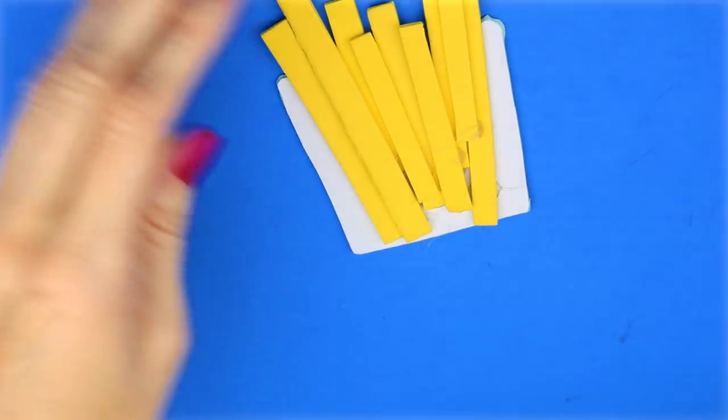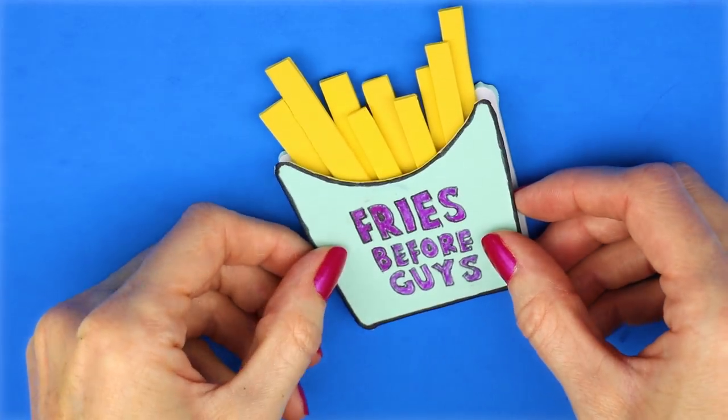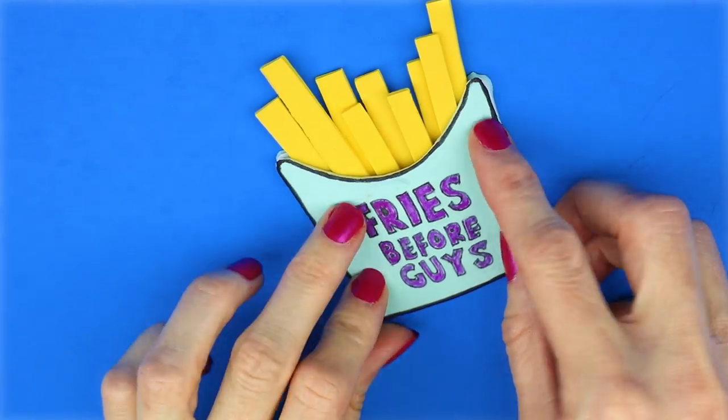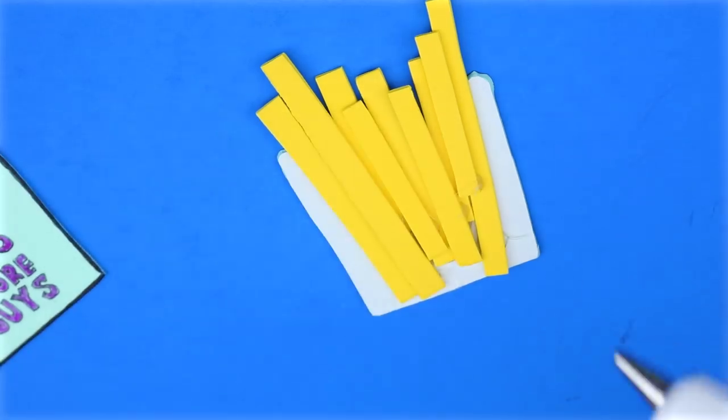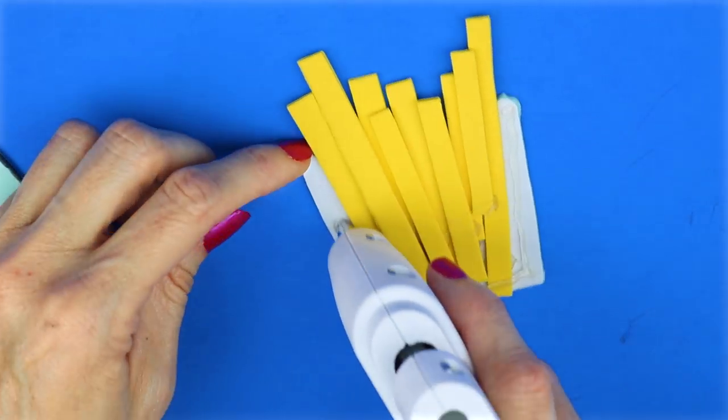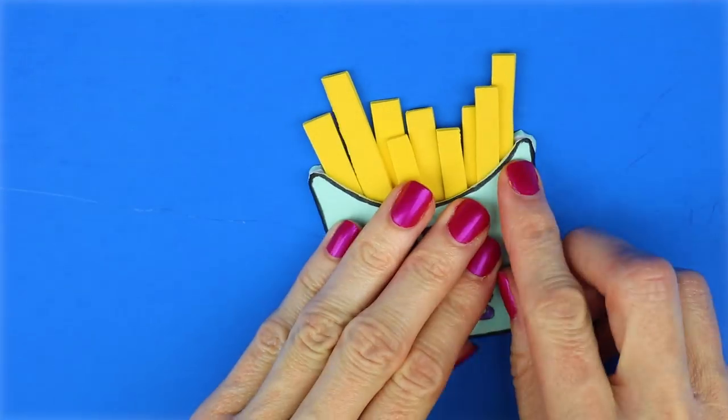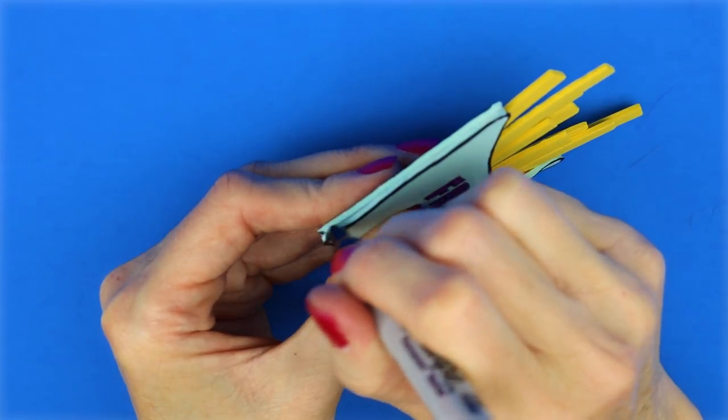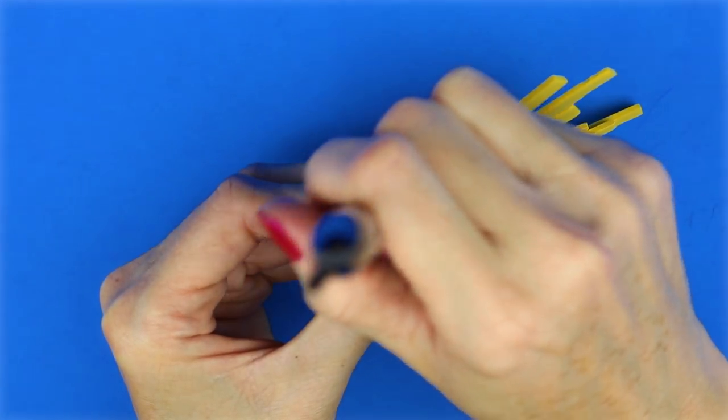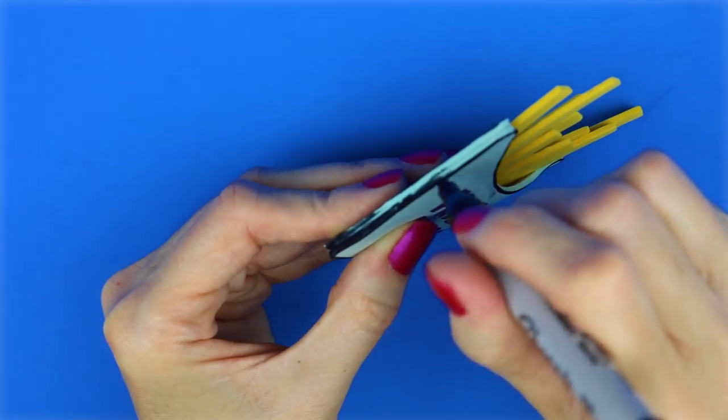Next, I glued the top to the bottom. I colored in the sides and the bottom with a black Sharpie to give it a finished look.